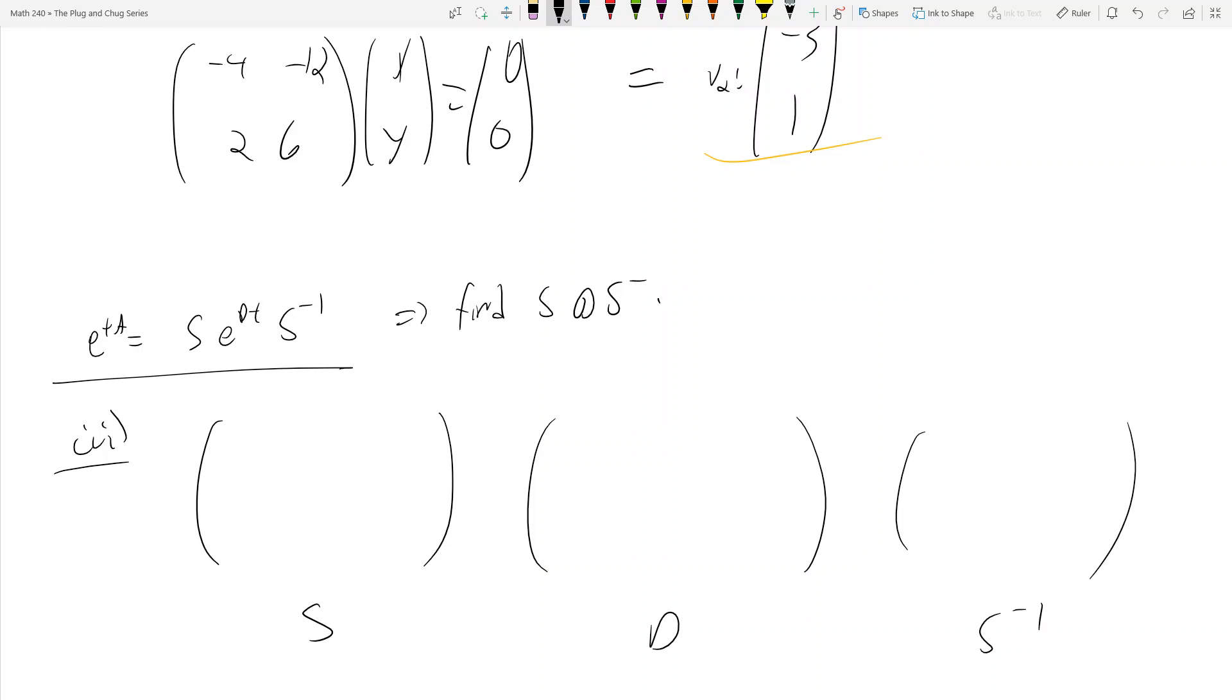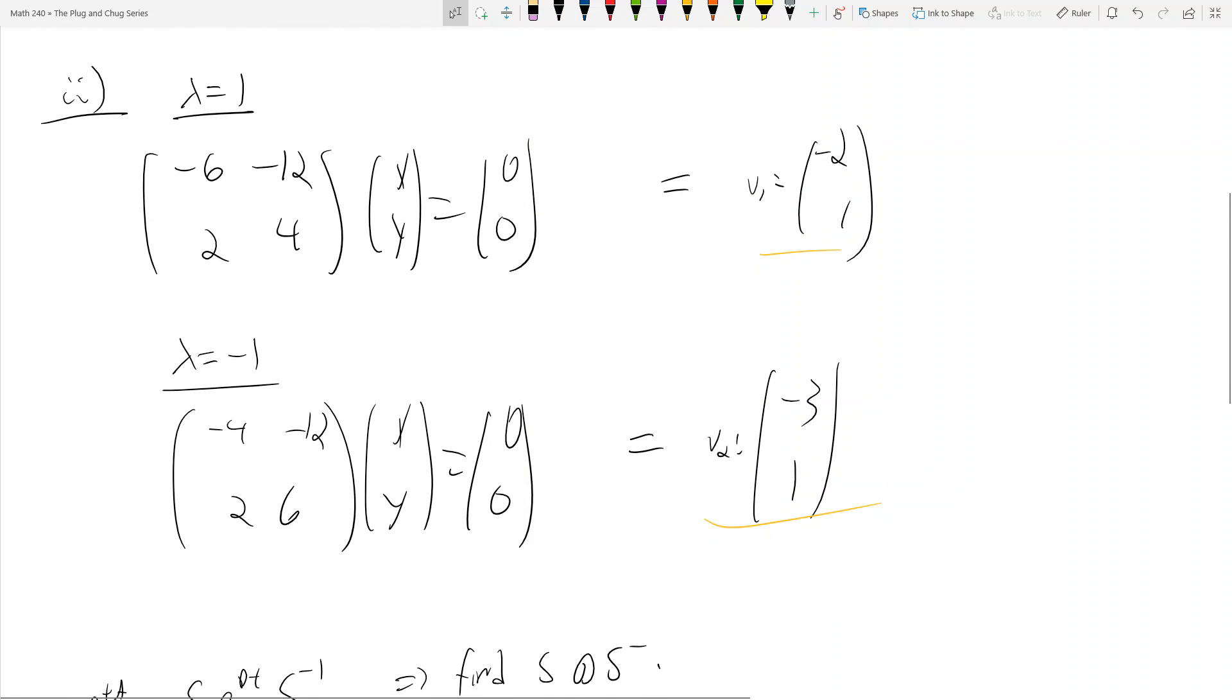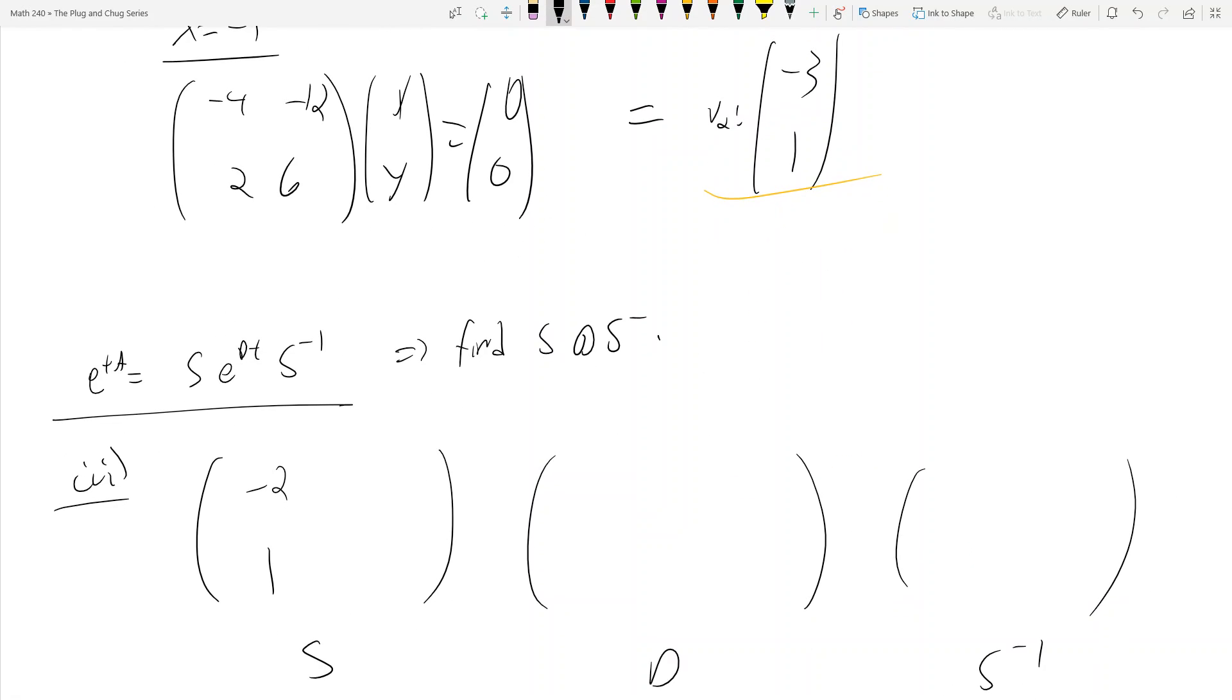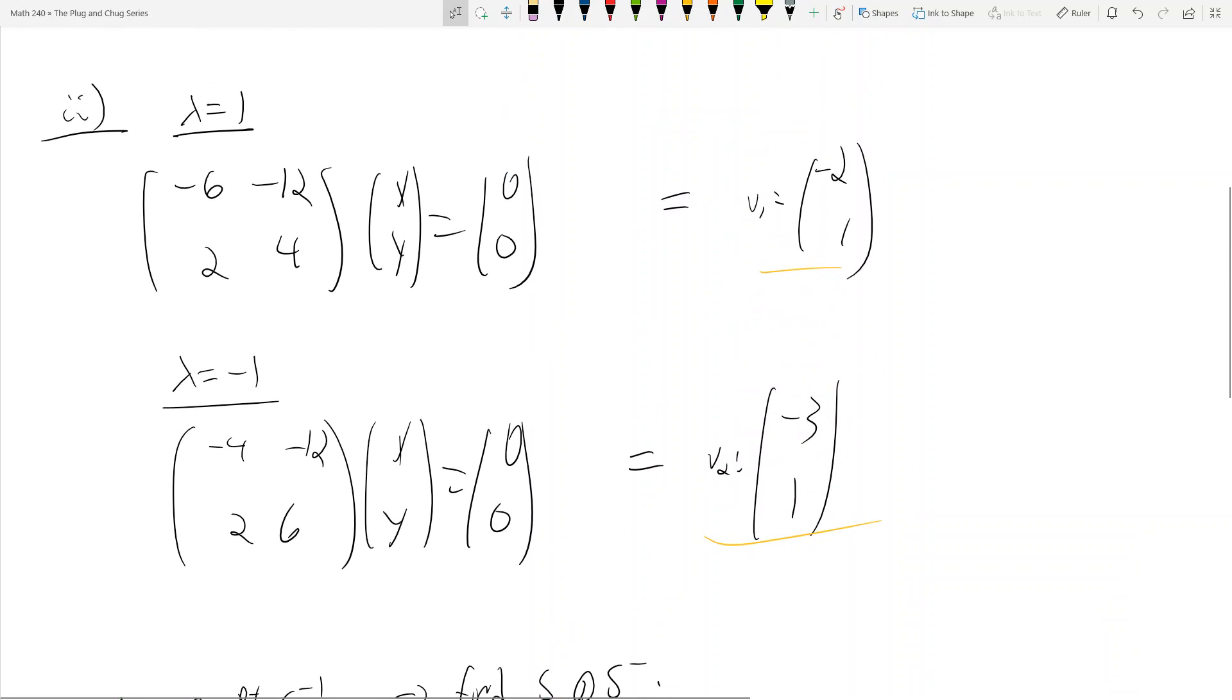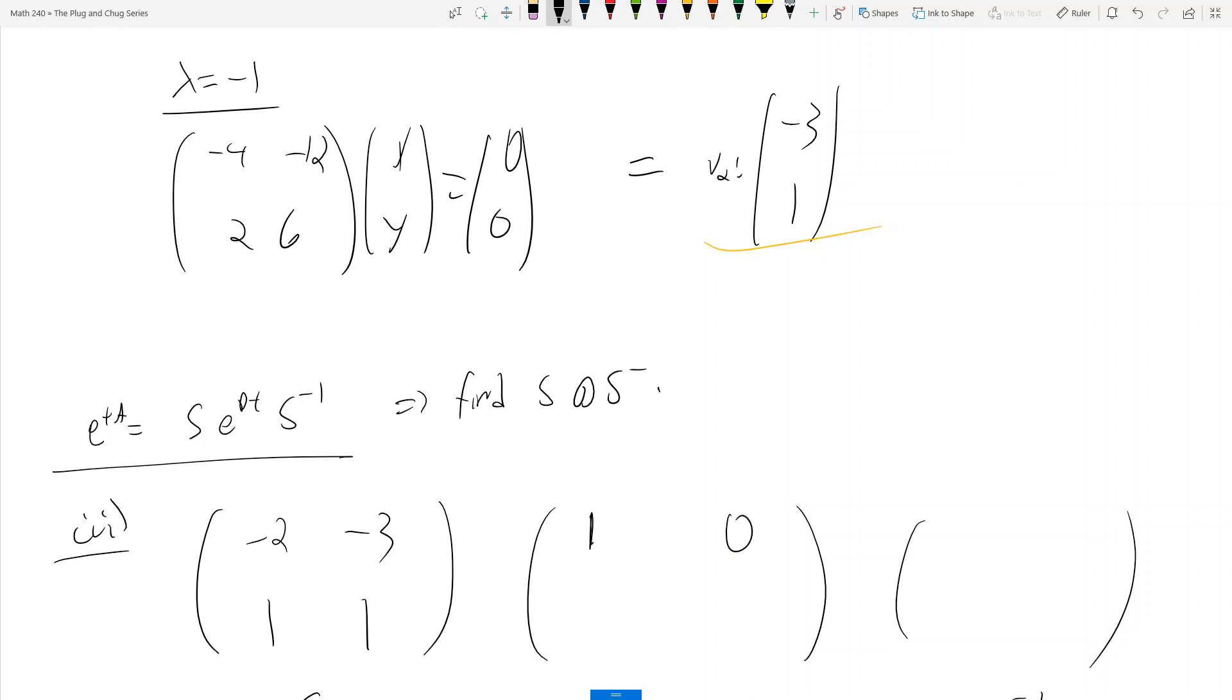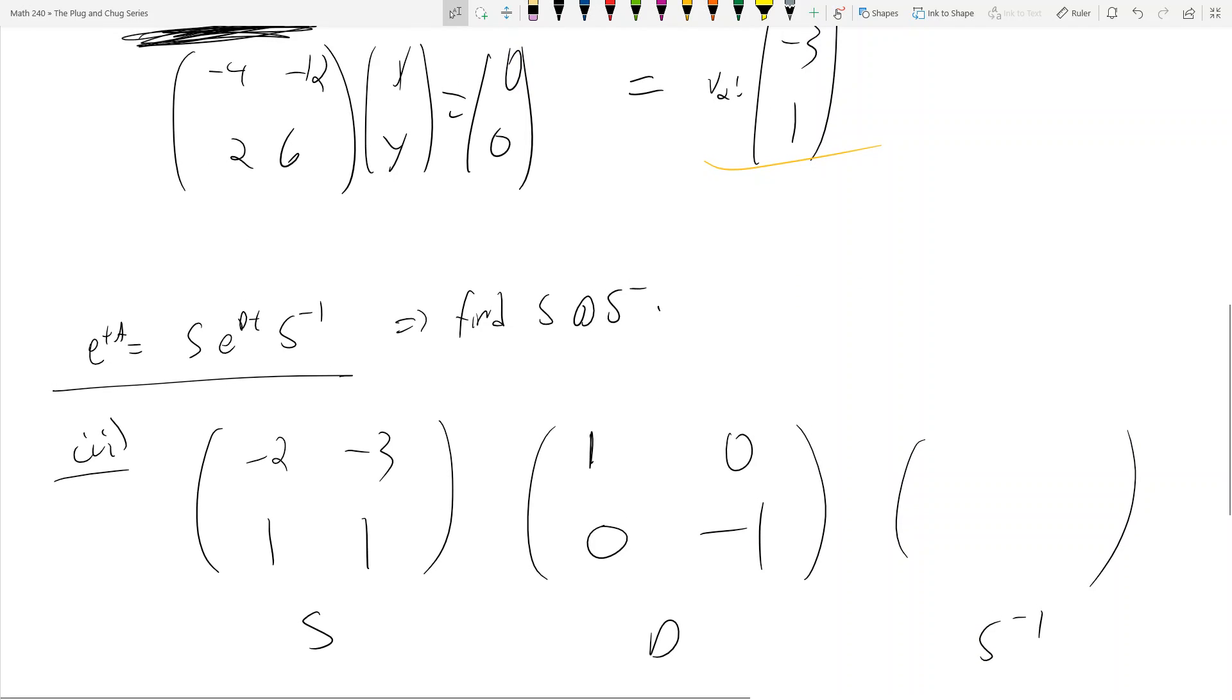So in step 3, we just create SDS inverse. So here's S, here's D, here's S inverse. What is S? Well, S is going to be our eigenvectors. So (-2, 1) goes first, which means for my D matrix this has to be positive 1 since that's the eigenvalue that it corresponds to. Then I put (-3, 1), which means here this has to be -1 since (-3, 1) corresponds to the -1 eigenvalue. To find S inverse, you can just do the determinant trick, and it's just (1, 3; -1, -2).